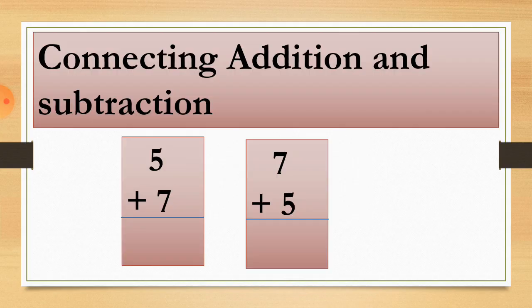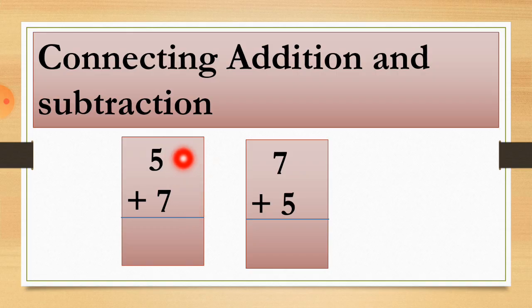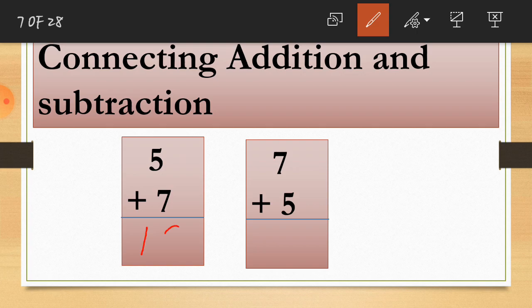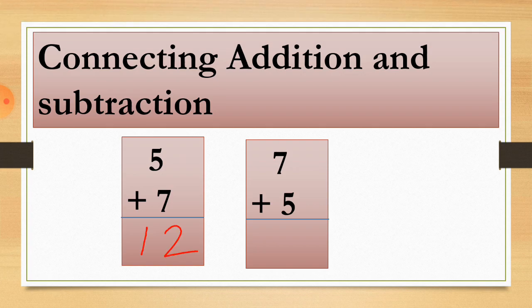Let's read through the example of connecting addition and subtraction. Here is 5 and here is 7. We have to add 7 to 5, so let's count 7 numbers after 5. Starting from 6: 6, 7, 8, 9, 10, 11 and 12. So here we get the answer 12. Our first sum is 5 plus 7 equals 12.